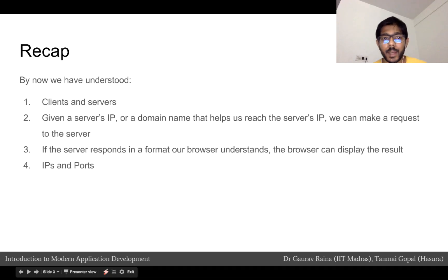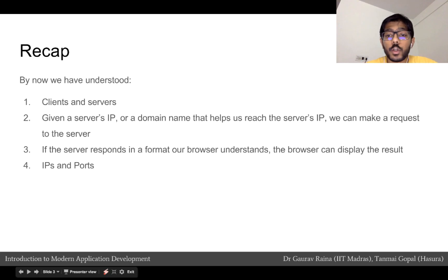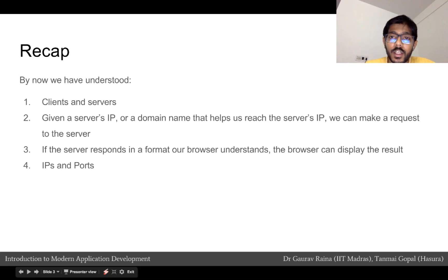Let's quickly recap what we've learned so far through modules 1, 2, 3 and 4. We've understood what clients and servers are. We've also understood that if we have a server's IP, or a domain name that translates into the server's IP, we can make a request to the server. Then if the server makes a response in a format that our browser can understand — such as HTML, a PNG image, or a text file — our browser can display the result. We've also had a brief introduction into what IPs and ports are.